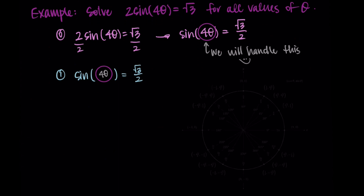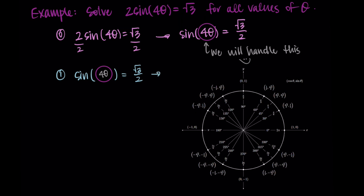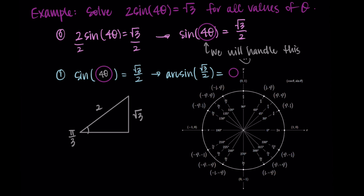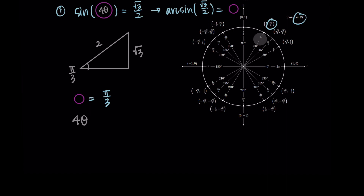Using sine of something equals square root of 3 over 2, we'll find the angle that produces this value using the unit circle or a reference triangle. The inverse function gives one solution: arcsine of square root of 3 over 2. Square root of 3 over 2 is positive, meaning we're in quadrant 1. Drawing the triangle — sine is opposite over hypotenuse, so opposite is square root of 3 and hypotenuse is 2 — this is the triangle for π over 3. We can confirm on the unit circle where sine is the y-coordinate, and we see square root of 3 over 2 at π over 3. So our first solution for the circle is π over 3, meaning 4θ equals π over 3.